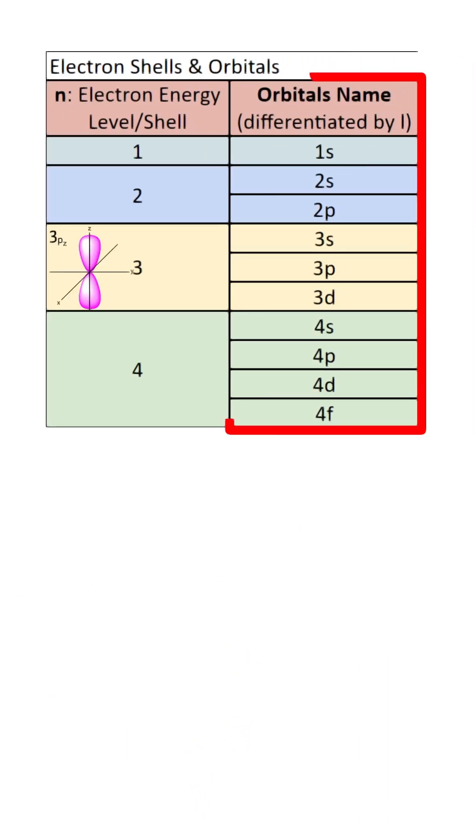Orbitals are named using their n value followed by a letter that represents the orbital type S, P, D, or F.